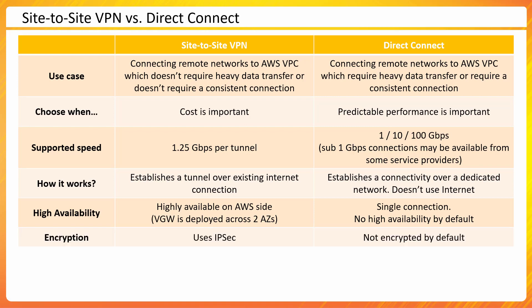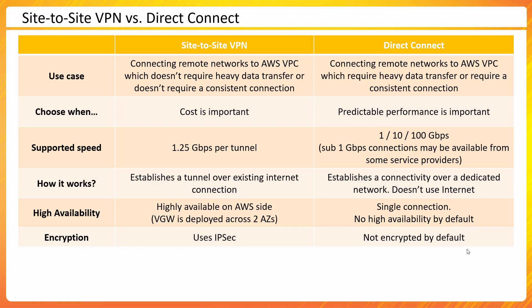Another difference is about encryption. Because VPN uses the internet, security is paramount, and AWS VPN uses IPSec — IP Security protocol — providing end-to-end encryption for all communication. In the case of Direct Connect, encryption is not there by default. There are ways to enable it if you want, and there is a newer feature available with some port types, but it is not there by default. Direct Connect relies on physical security and physical separation of your data rather than tunneling over a public network.